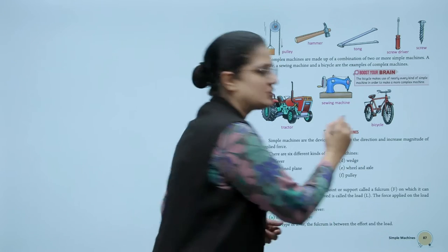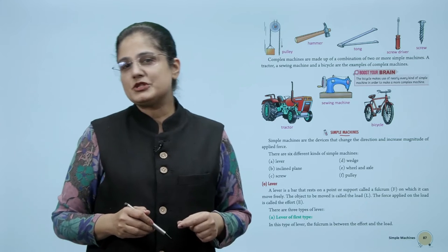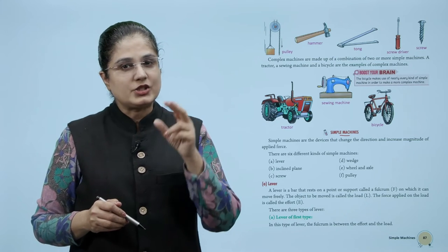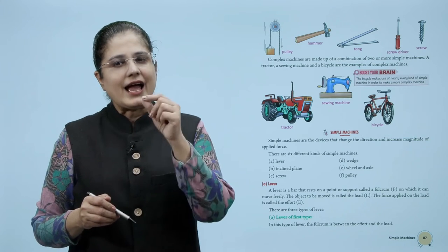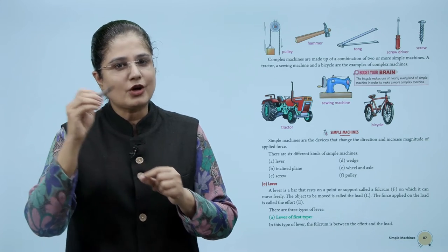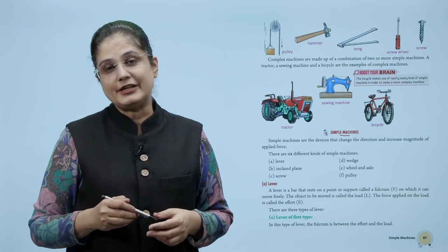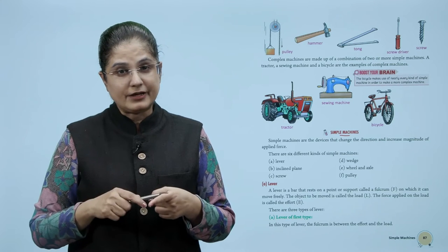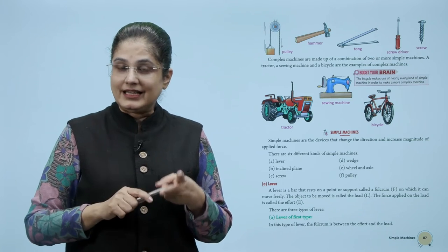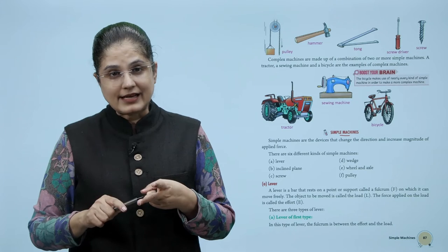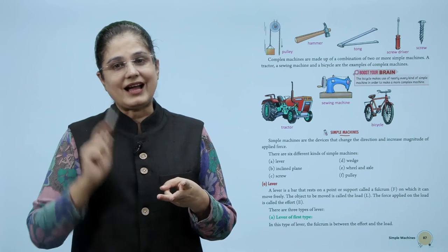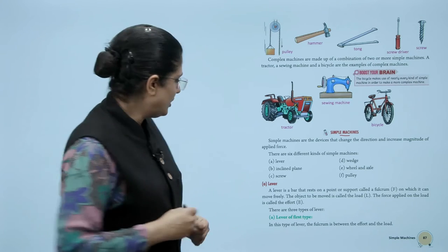First we will look at simple machines. Simple machines are devices that change the direction and increase magnitude of applied force. There are six different kinds of simple machines: lever, wedge, inclined plane, wheel and axle, screw, and pulley.